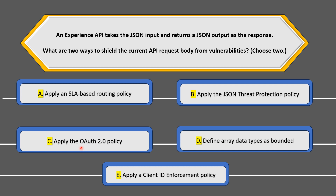Option C is apply the OAuth 2.0 policy. This policy is part of authentication — an external OAuth provider uses scopes and tokens to authenticate requests sent to your API. Again, in the context of shielding the API request body from vulnerabilities, this does not seem to be the correct choice.